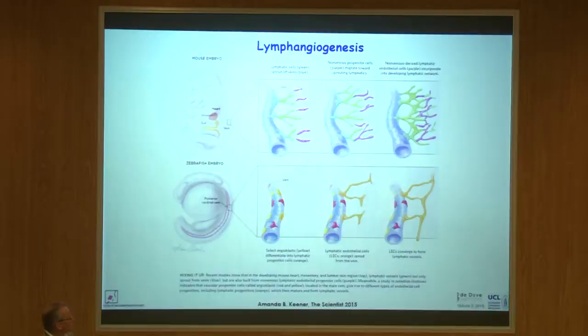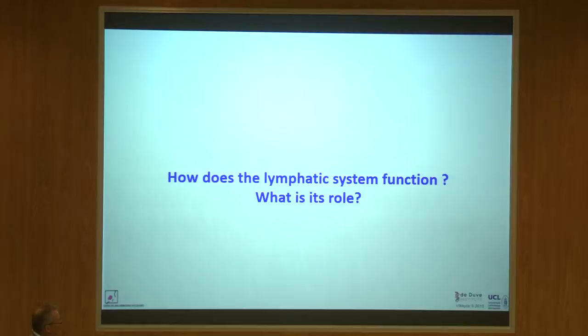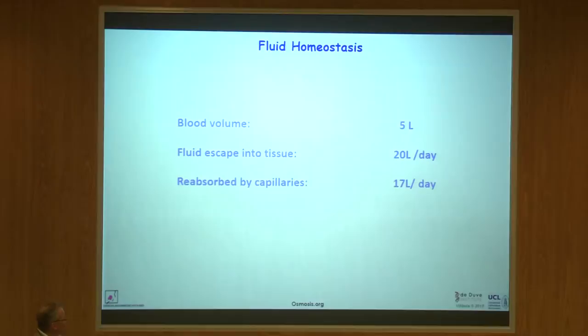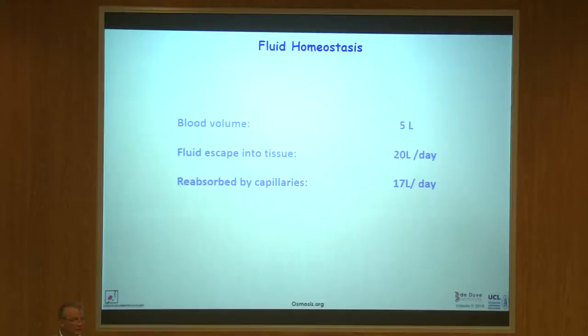How does this system function and why do we need it? We definitely do need it. We each have about five liters of blood, but about 20 liters of liquid comes out of the capillary system each day. The capillaries resorb the majority — 17 of the 20 liters — but three liters remain in the tissues that capillaries cannot take back into the blood vascular system. That is what the lymphatics do: they resorb this liquid and return it to the venous system via the trunks.